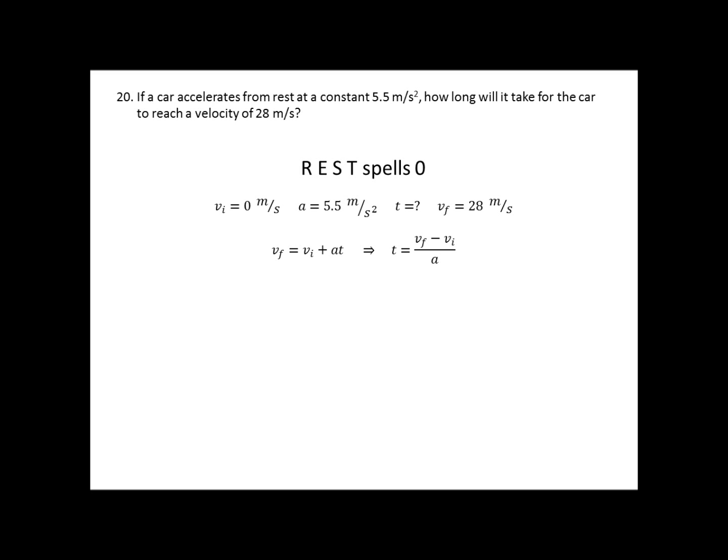Now, my equation is solved for VF. So, I need to do a little bit of algebra to solve for time. The way I do that is I subtract the VI over, and then I divide by my acceleration. So, now I plug in my final velocity is 28, my initial velocity is zero, and my acceleration is 5.5. So, I get 5.1 seconds. Again, I only kept two significant digits because of the 5.5 and the 28. When they use words like rest or stop, it doesn't figure into the whole sig fig stuff.